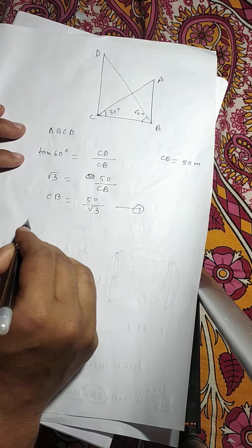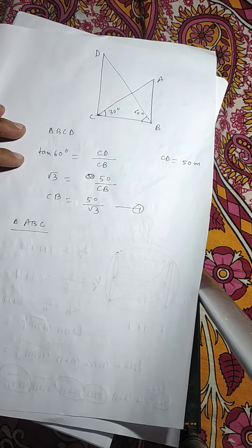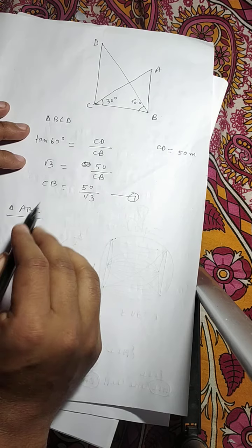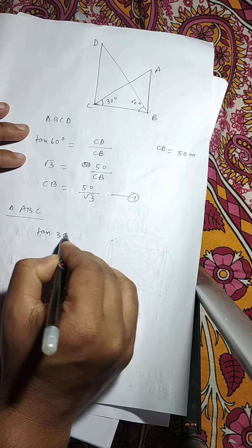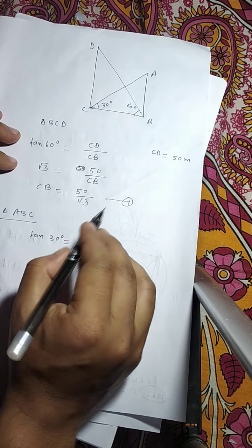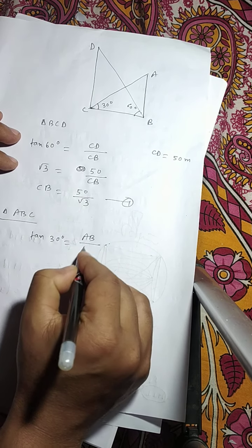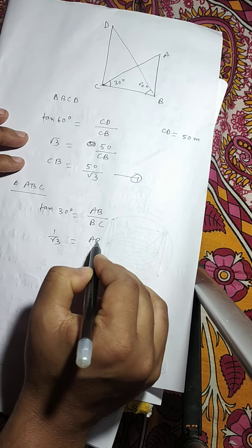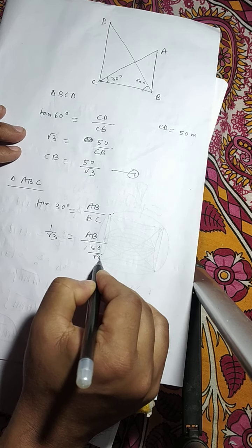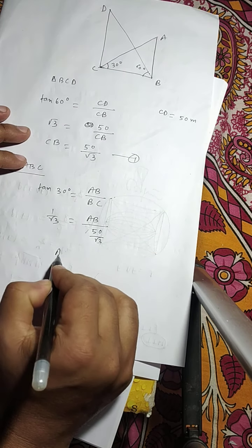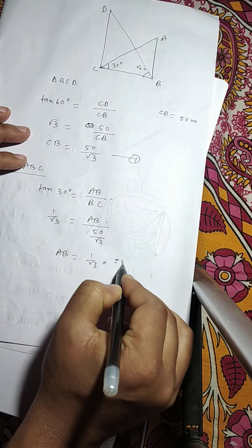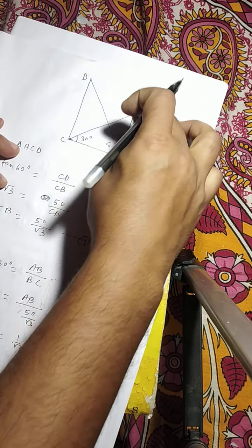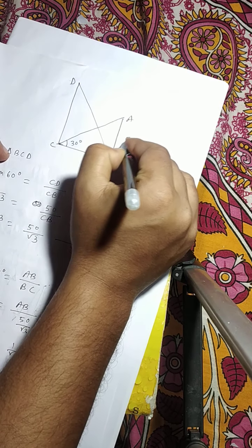Now in triangle ABC, which is a right triangle, we can write tan30° equals perpendicular by base. So here perpendicular is AB and base is BC, which equals 50 by root 3. So tan30°, that means 1 by root 3, equals AB by BC, that is 50 by root 3. Therefore AB equals 1 by root 3 multiplied by 50 by root 3, which gives 50 by 3. So the height of the building is 50 by 3 meters.